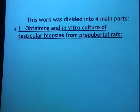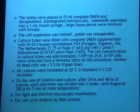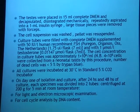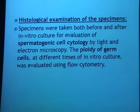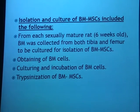The work was divided into four main parts. The first was obtaining an in vitro culture of testicular biopsies from prepubertal rats, done through digestion and culture with addition of FSH and testosterone. Then we did histological examination of the specimens using cytology and ploidy. We also performed isolation and culture of bone marrow derived mesenchymal stem cells from sexually mature rats, obtained from the femurs, cultured and incubated, then harvested through trypsinization.